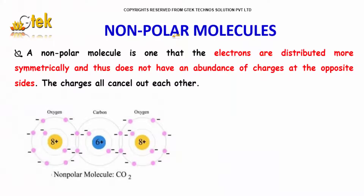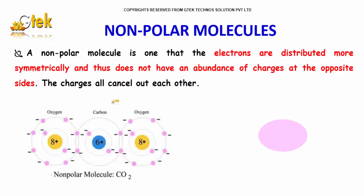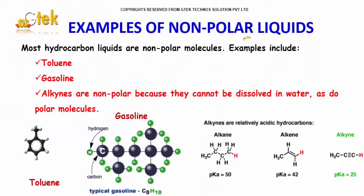A non-polar molecule is one in which the electrons are distributed more symmetrically, and thus does not have an abundance of charges at the opposite sides — the charges all cancel out each other. Typical examples of non-polar liquids include toluene, gasoline, and alkynes with triple bonds. Because they cannot be dissolved in water, unlike polar molecules. Note: alkane is a single bond, alkene is a double bond, and alkyne is a triple bond.